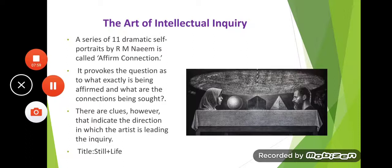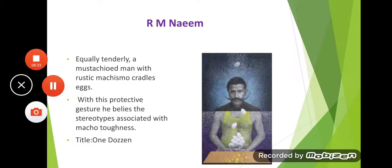There are clues that indicate the direction in which the artist is leading the inquiry. An artist always places some element or symbol in their work through which you can identify what topic or idea they are discussing, or what direction they are pushing the viewer to think in. The title of one painting is 'Still Plus Still Plus Life' — meaning there is stillness and also an indication of life — a quite interesting title that supports the image.